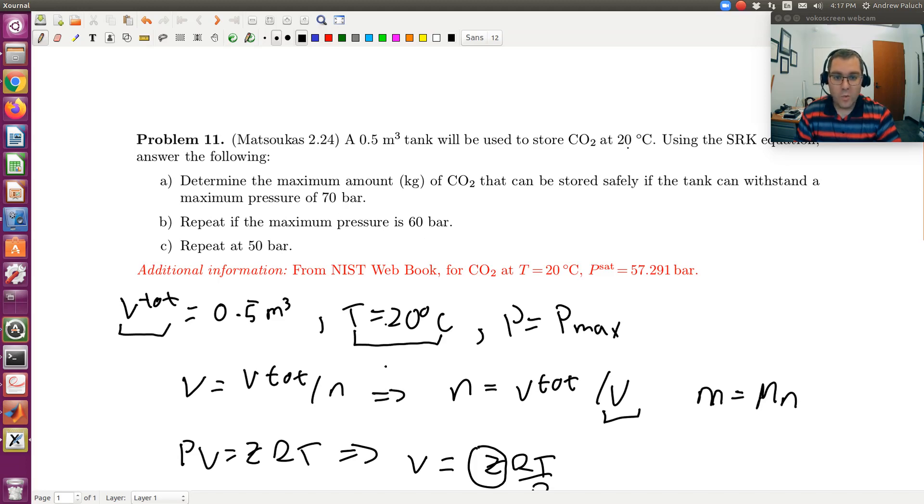So in A, we're at 20 degrees C and 70 bars. So we're told that at 20 degrees C, PSAT, saturation pressure is 57.291. So if we're at the same temperature, but our pressure is greater than PSAT, what phase do we have? So if I'm at the same temperature, but pressure is greater than PSAT, what phase do I have? Alright. So if P is greater than PSAT at the same T, that means I'm going to have a liquid phase. Okay. So if I get more than one real Z, I'll choose the smallest.